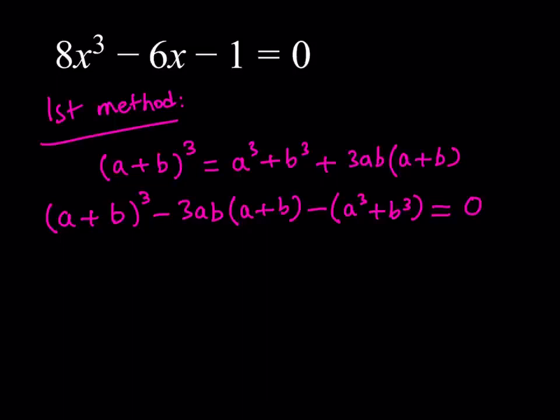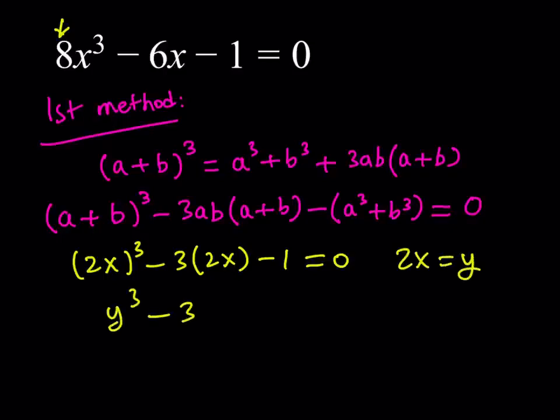So, what is my original one? 8x³ minus 6x minus 1 is equal to zero. So, let's go ahead and write it a little differently because this is not monic. Remember, we talked about monic equations in other videos. Monic means the coefficient of x³ in this case is supposed to be 1. And we can make it easy. Look, we can write it as (2x)³ minus 3 times (2x) minus 1 is equal to zero. And if you do the substitution 2x equals y, then you've got a monic equation, which is y³ minus 3y minus 1 is equal to zero.